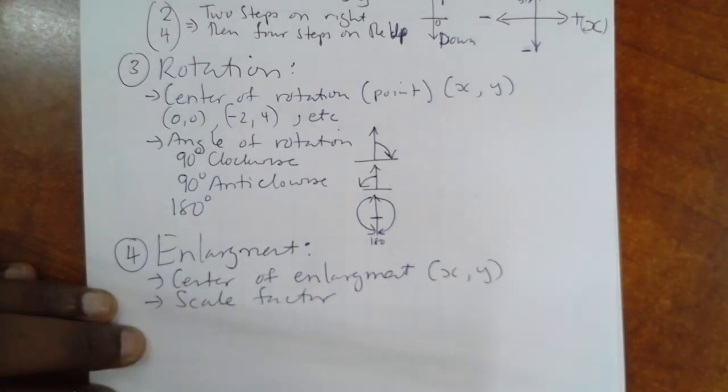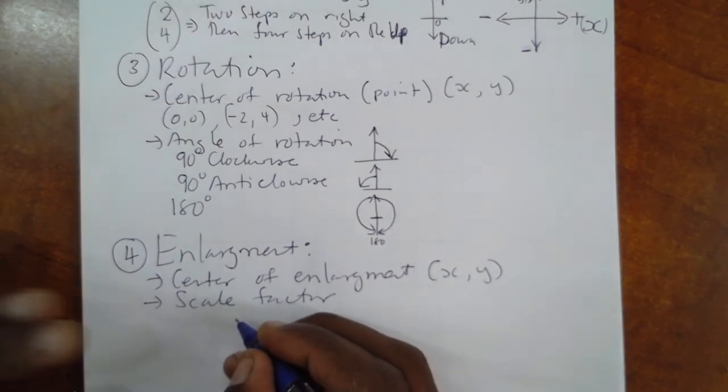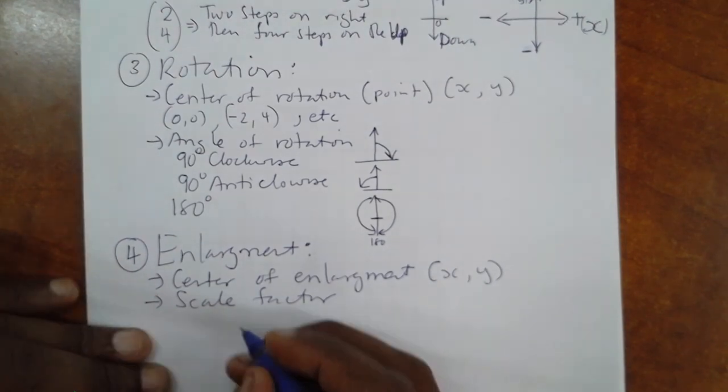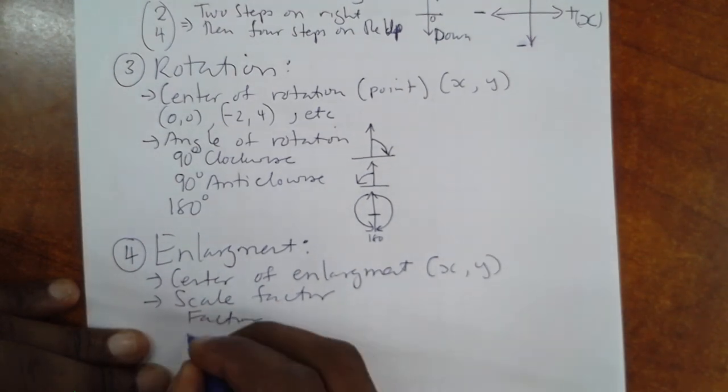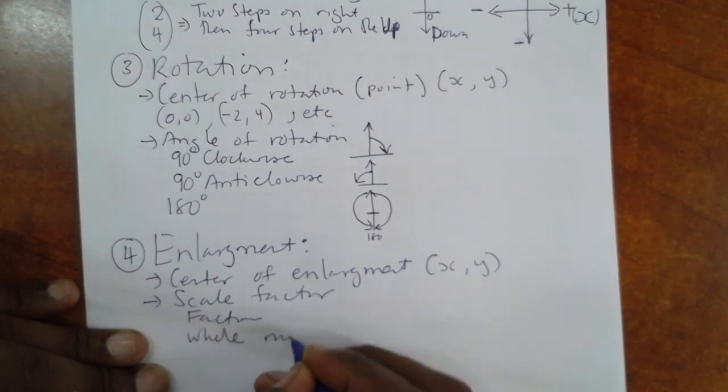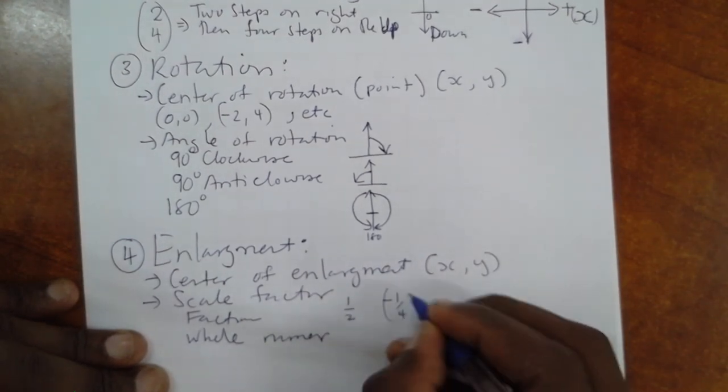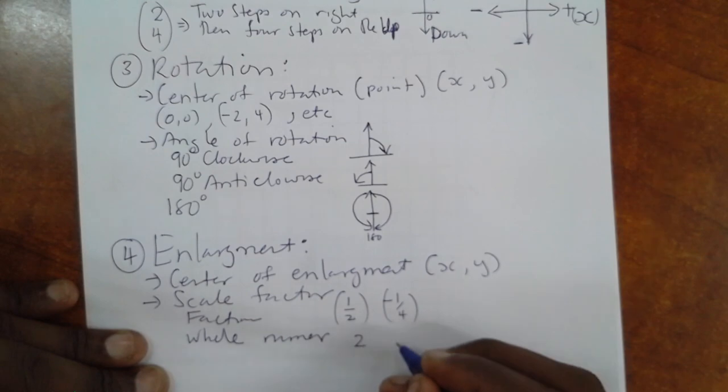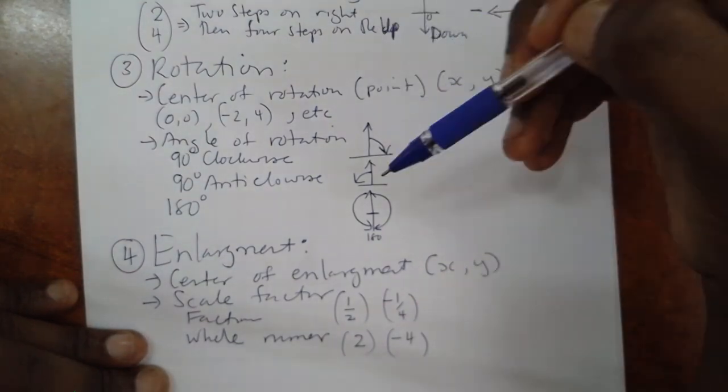Now, here is where the importance is. In order for us to do this, we shall have to consider two things. Either fraction or whole number. So, to do that, fraction will give us a shape of being smaller size. A number will give us a shape of being bigger size. These are the four important transformations.